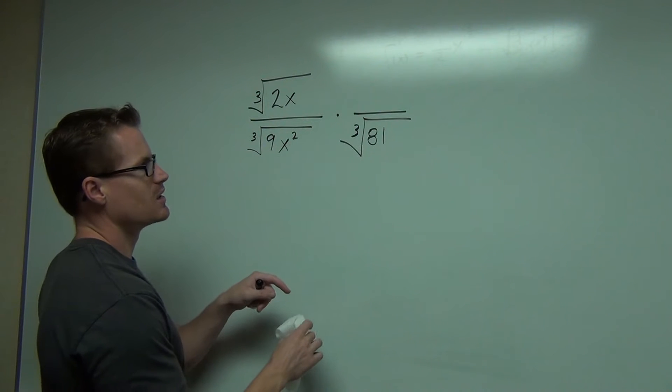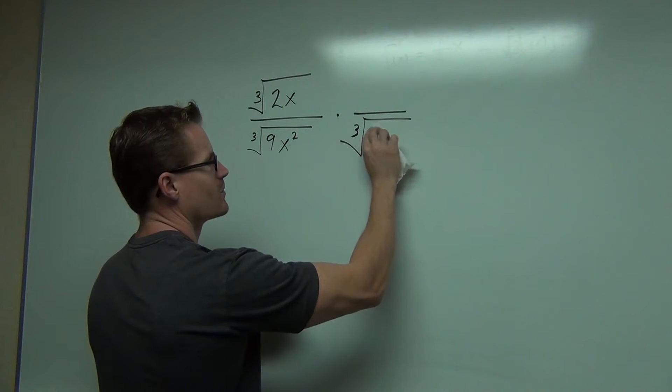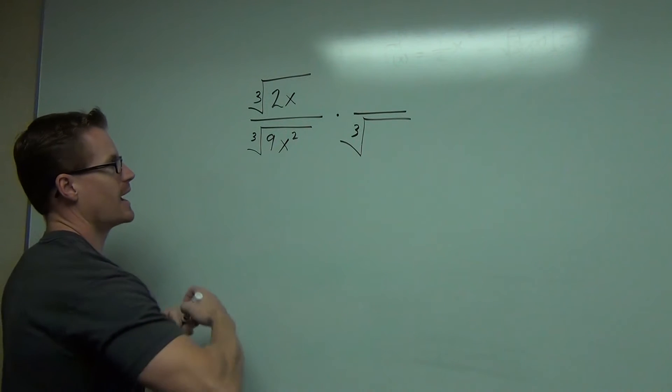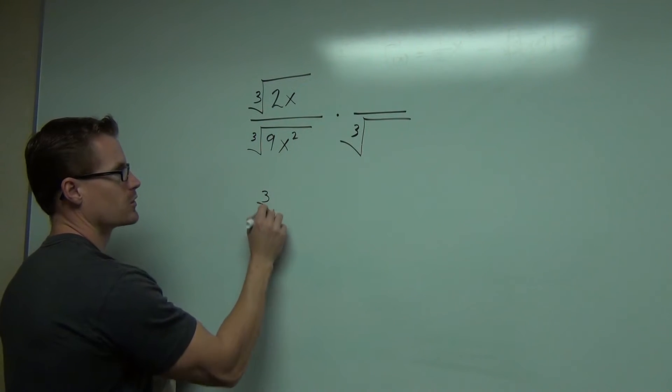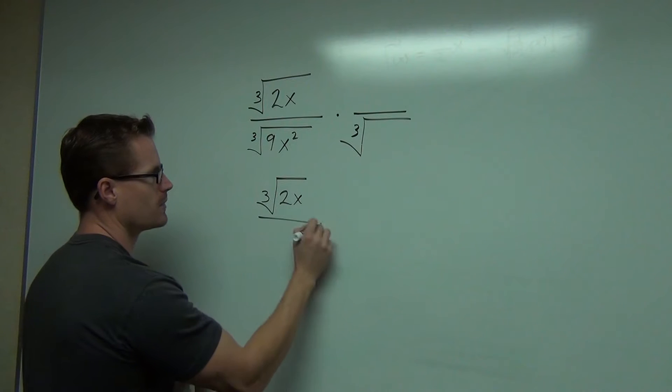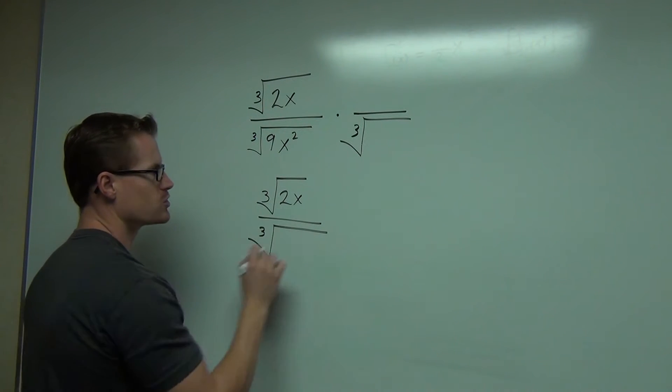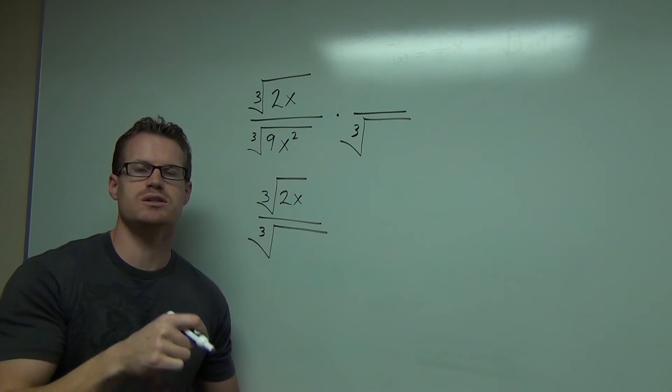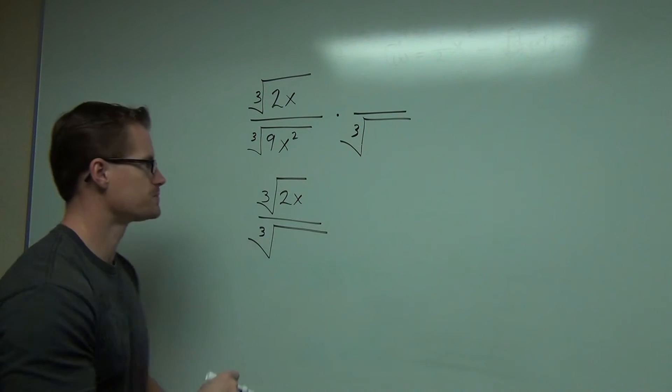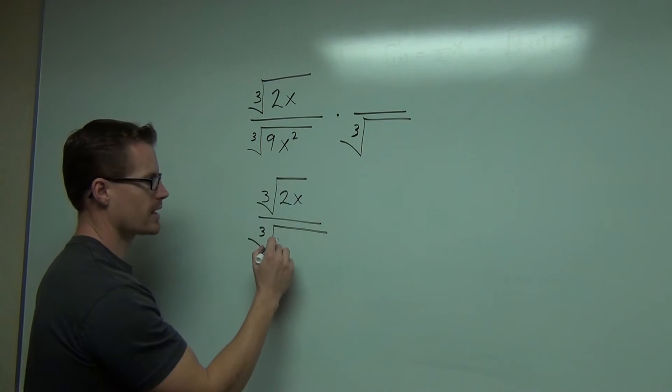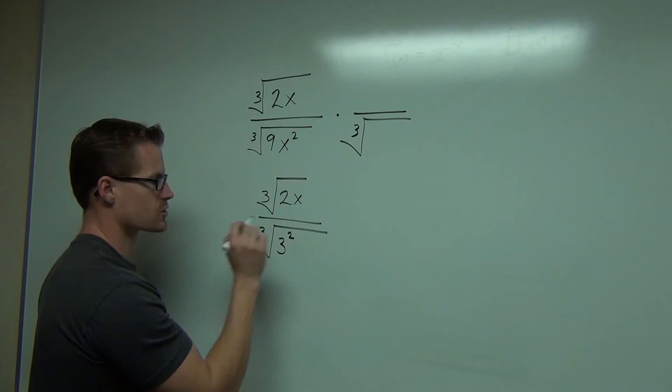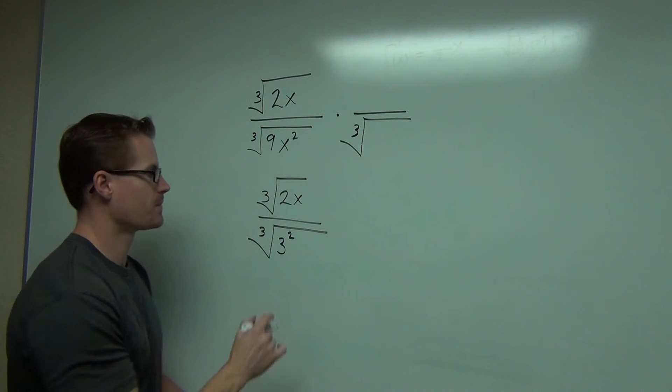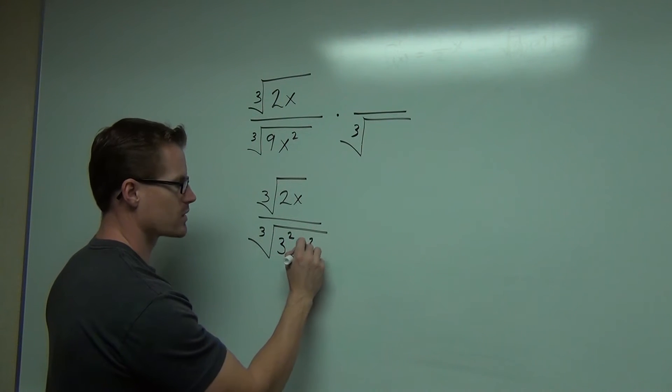So instead of doing this cube root of 81, no, no, no, we don't want to deal with that. Instead think of this as the cube root of 2x over the cube root of—you're going to change 9 or whatever number you have into some number raised to some power. So for instance, 9 you can write as 3 squared. Realize that that is still 9, I'm just writing that as a power. And x squared stays the same.